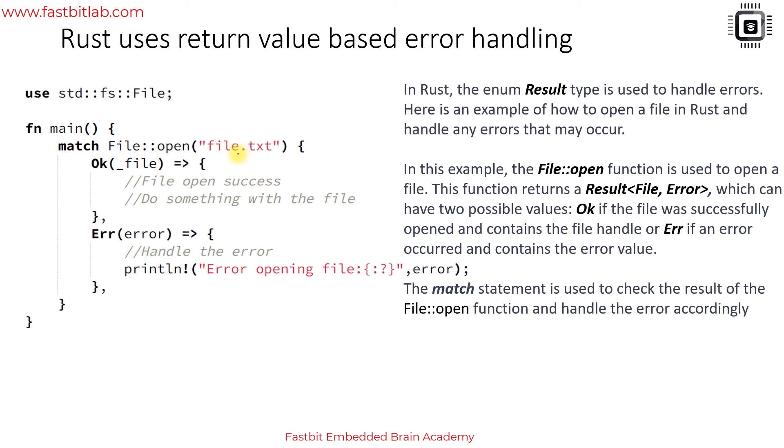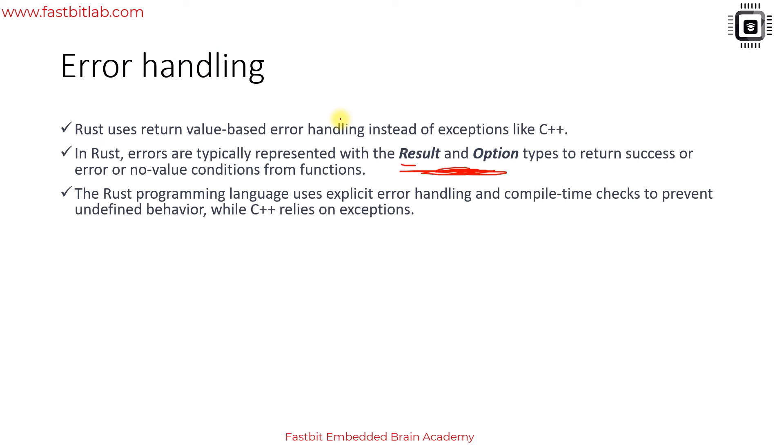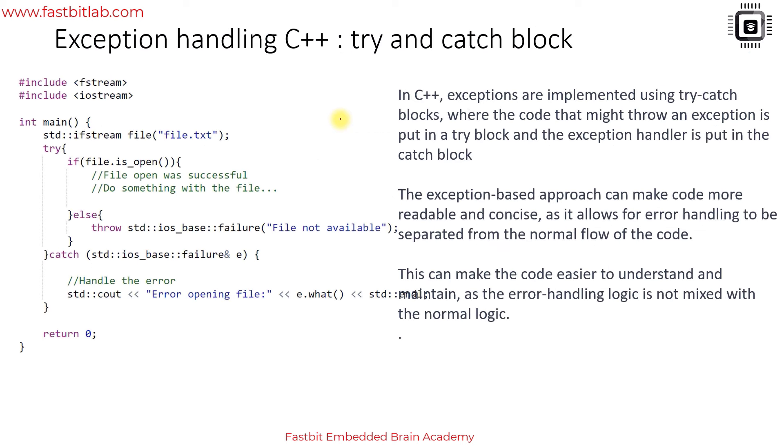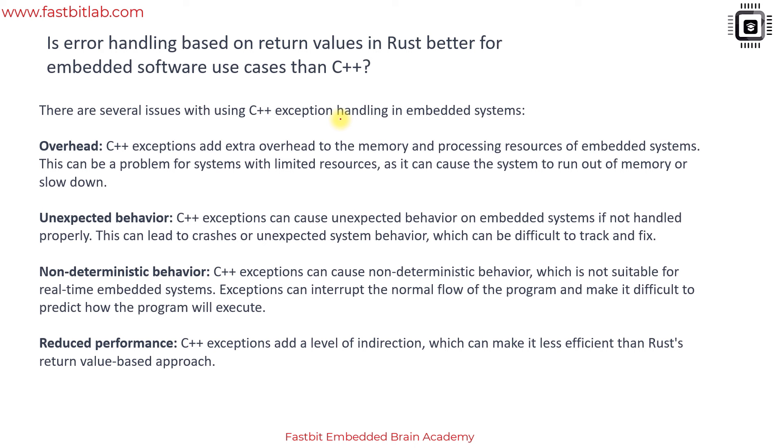These two are important data types or data structures available in Rust and we will understand these data structures later which are very helpful while handling errors. These data structures are used to return success or error or no value conditions from functions. This is one example how the error handling may look like in Rust - this is an example with file handling and don't worry about these examples we will understand them later.